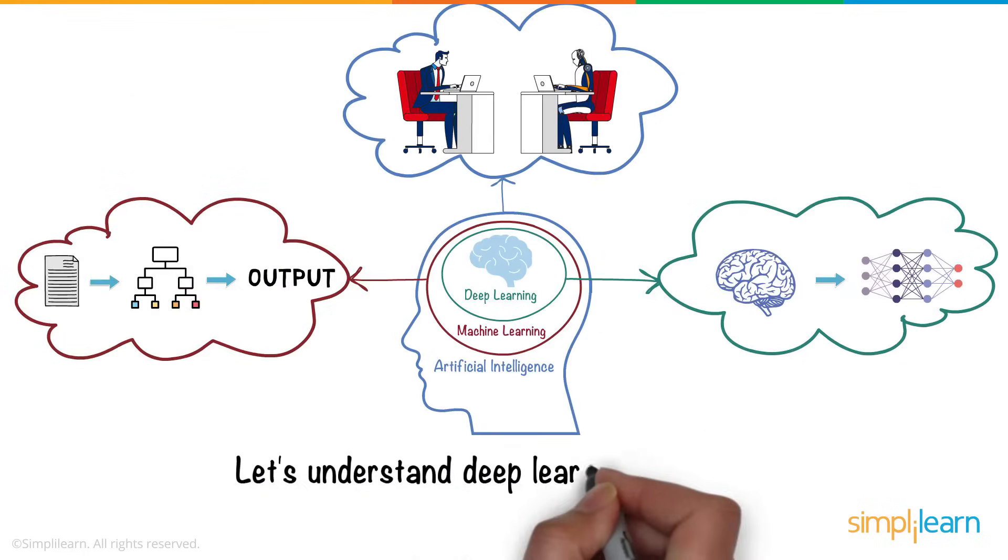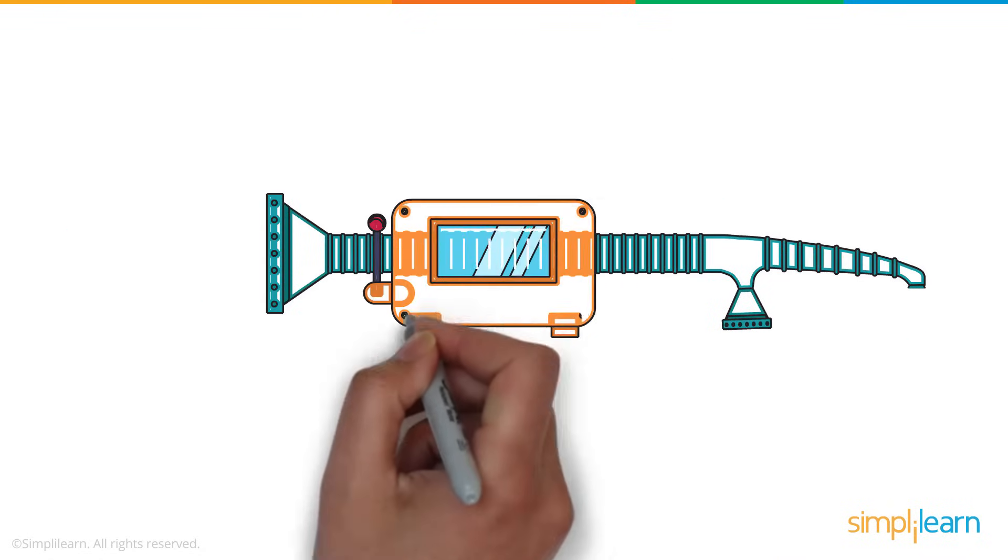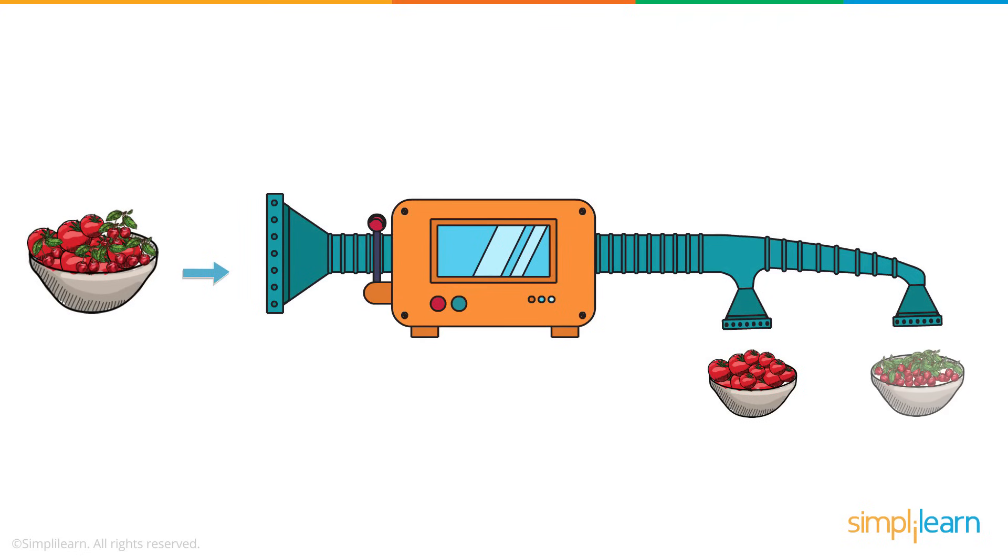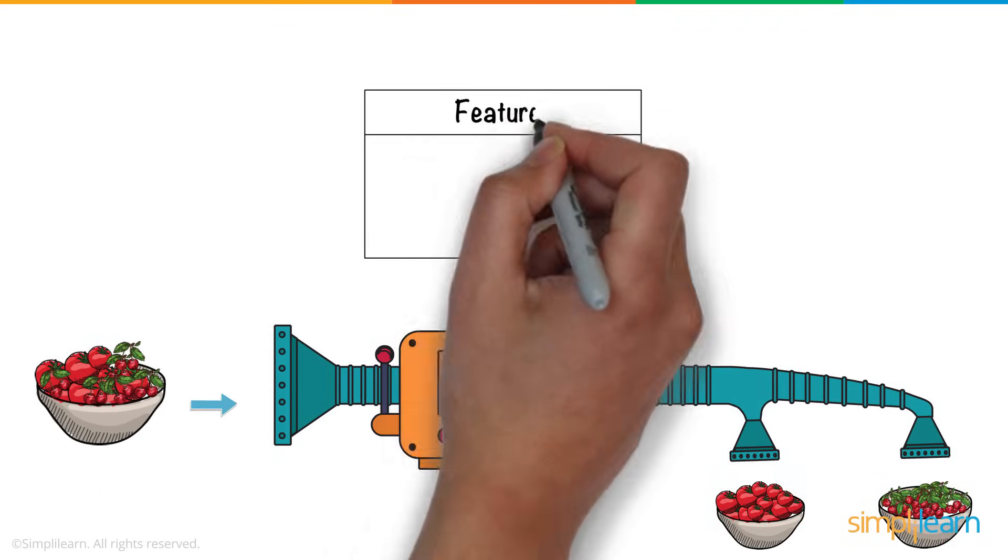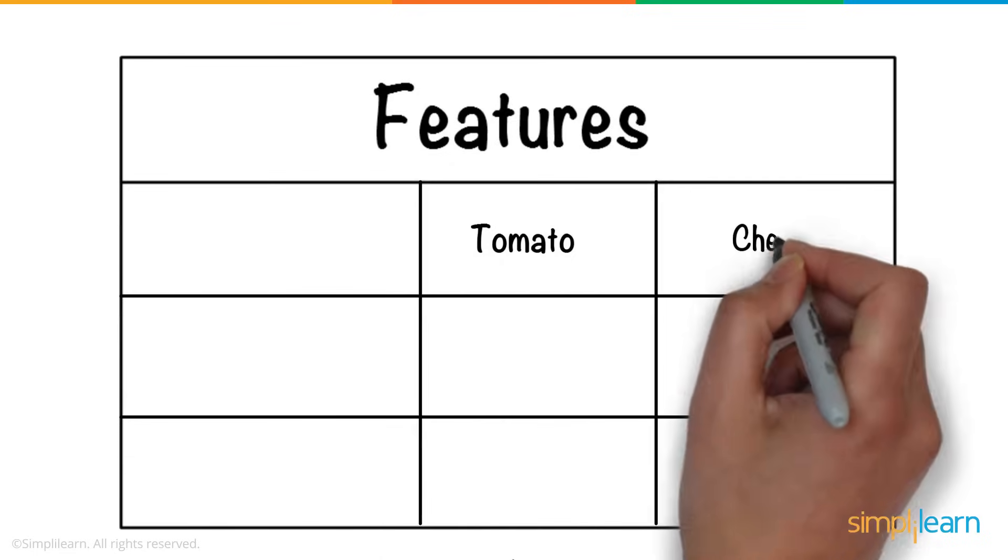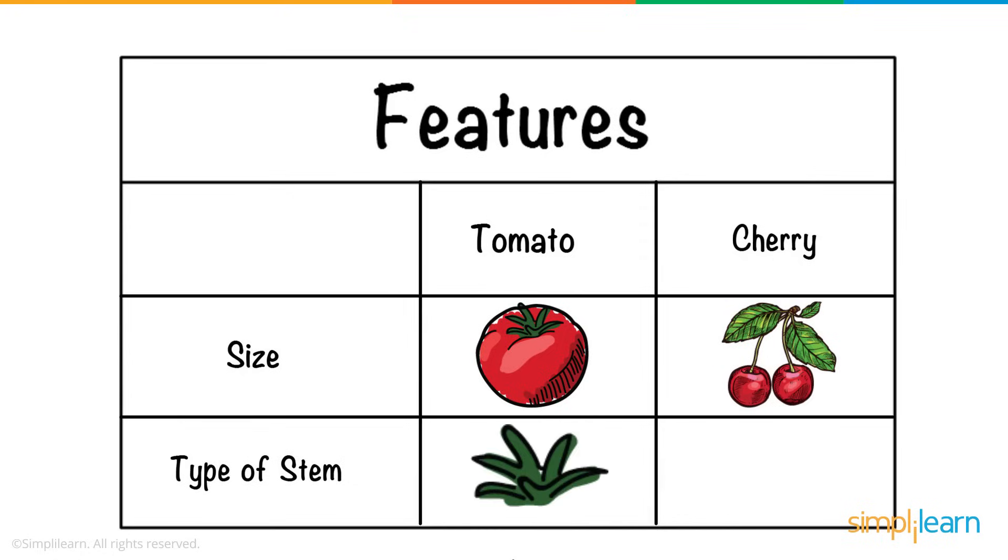Let's understand deep learning better and how it's different from machine learning. Say we create a machine that could differentiate between tomatoes and cherries. If done using machine learning, we'd have to tell the machine the features based on which the two can be differentiated. These features could be the size and the type of stem on them.